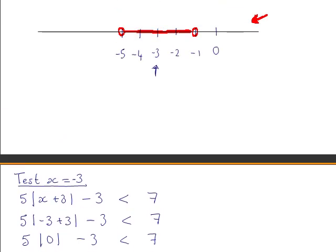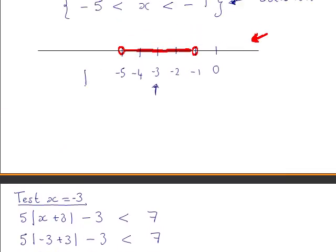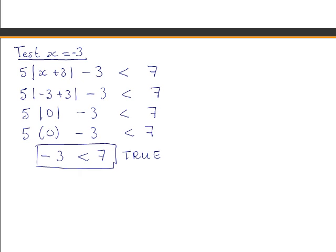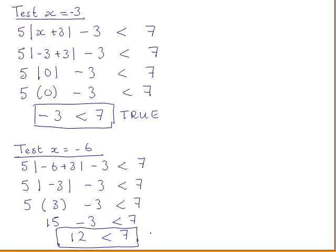Now we will try a value that is not part of the solution set — a value less than minus 5. We will try x equals minus 6. When substituted into the original inequality, we end up with 12 less than 7, which is false. Again, this is as expected because minus 6 is not part of our solution set.